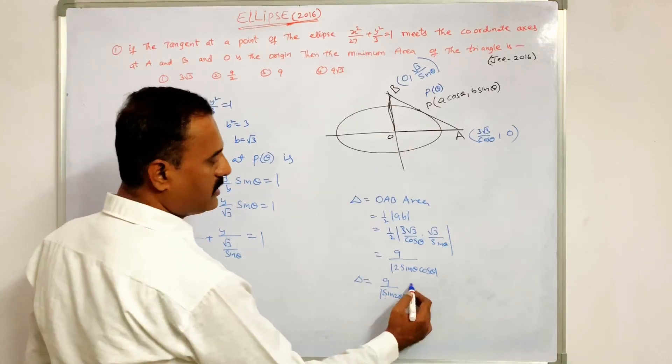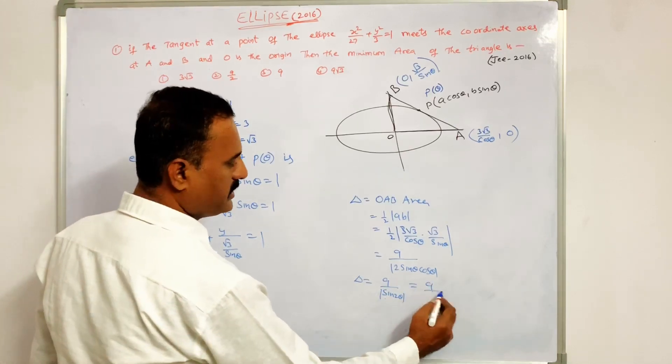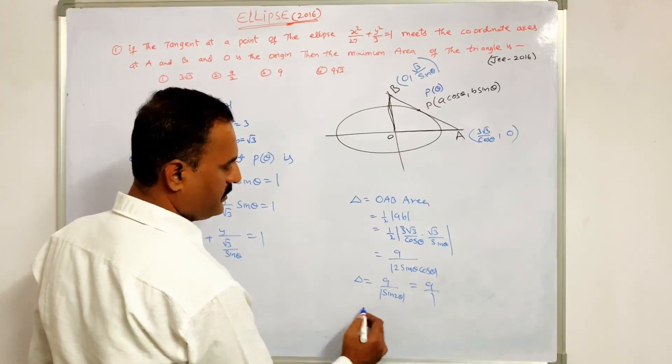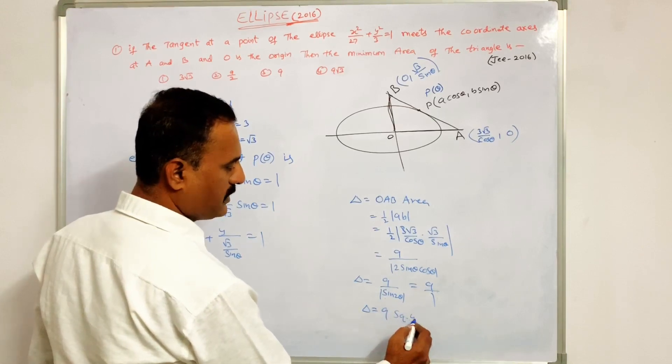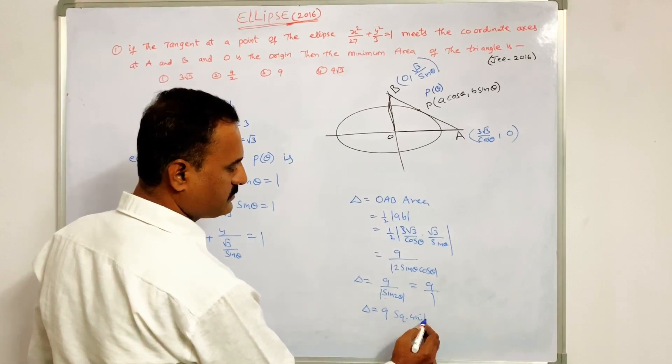Therefore the minimum value of sin2θ is 1. Therefore the minimum area Δ = 9 square units.